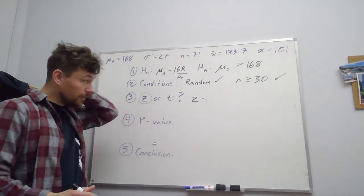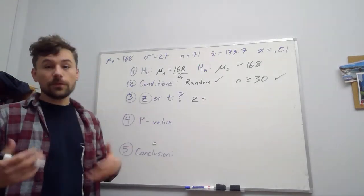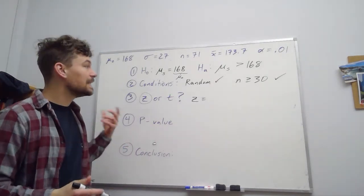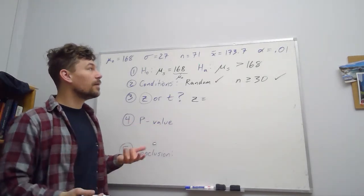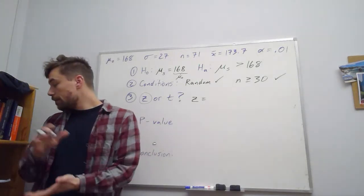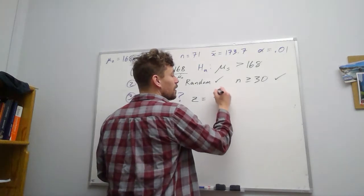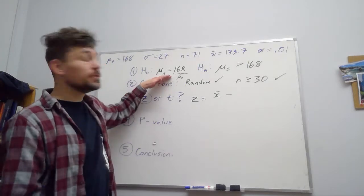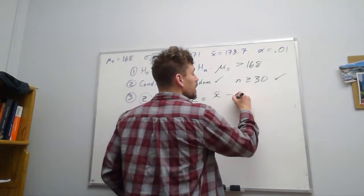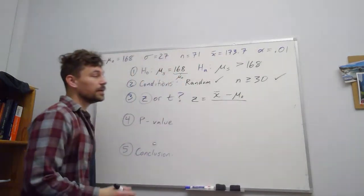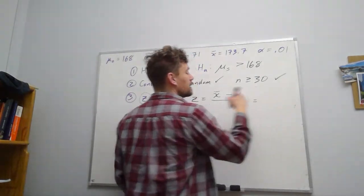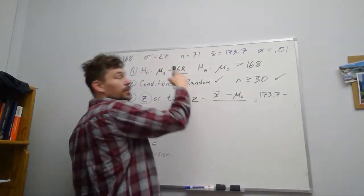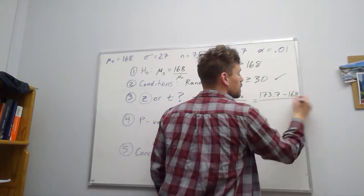We have a formula for z, right? We've had actually several different formulas for z, depending on what our scenario is. In the top, we always say, well, how far away is our estimate from the real value? So x̄ is our estimate from, and when we say the real value, in this case, this is the assumed value. We assume the null is true. So x̄ minus μ₀. And so if we're keeping track of this, right, we could say, well, x̄ was 173.7, and μ₀ was 168. So that's going to be on the top.